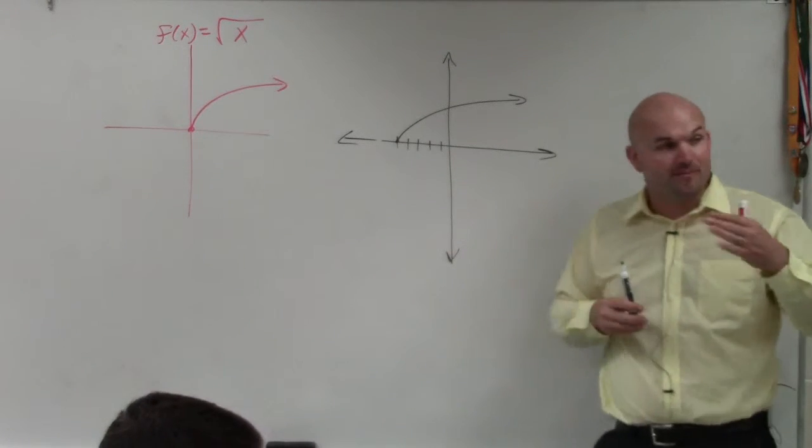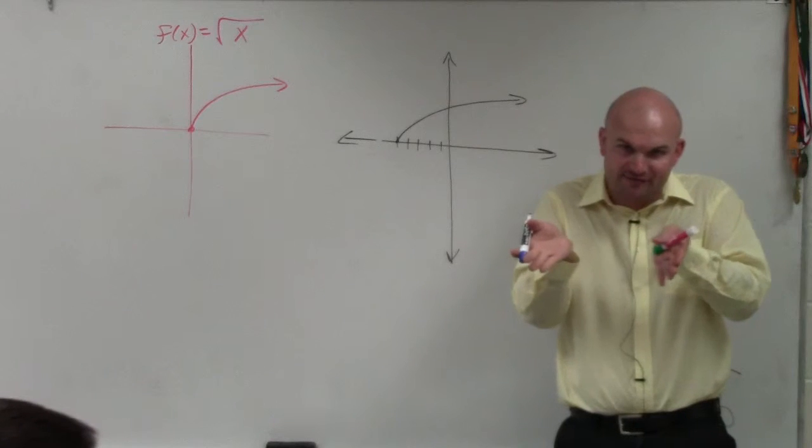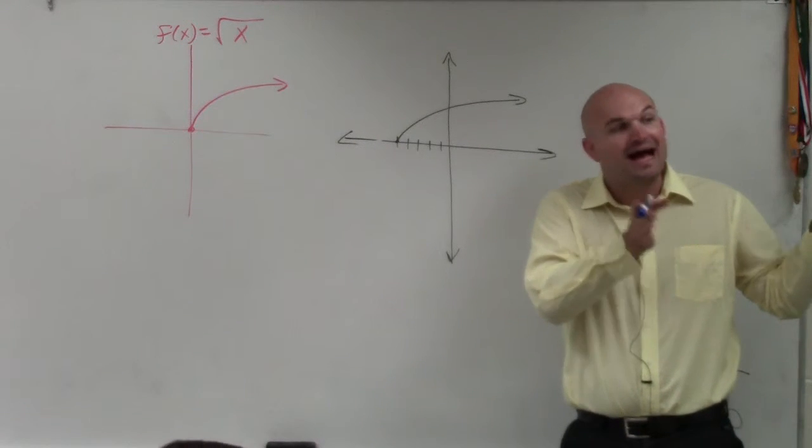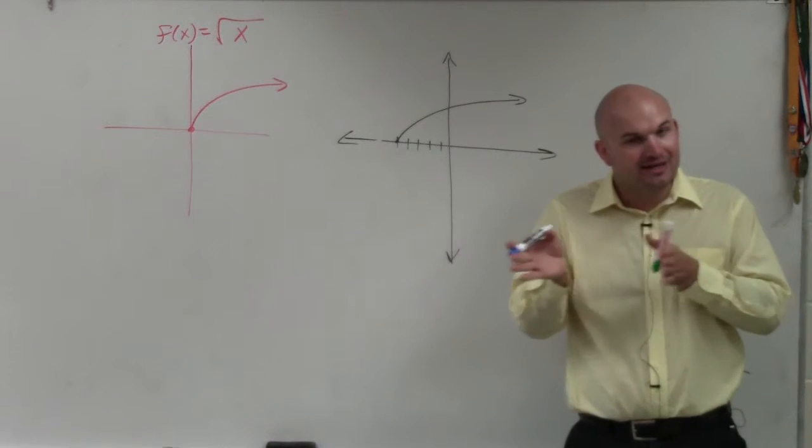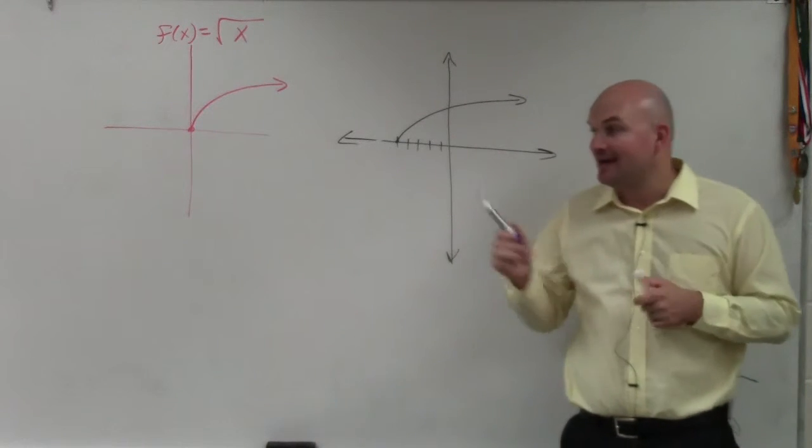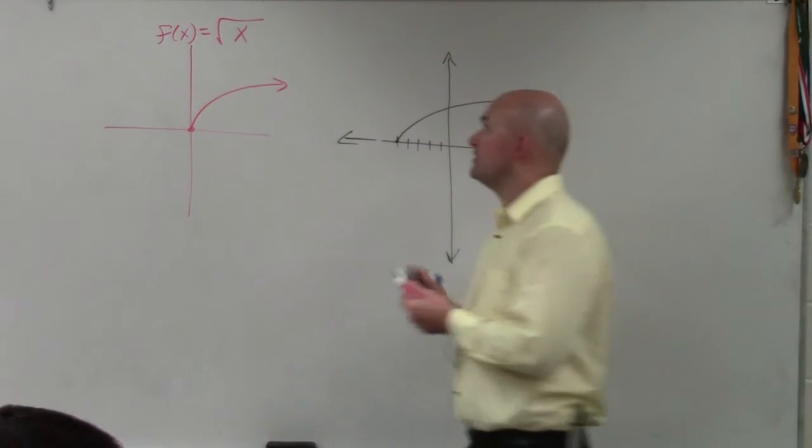So if you remember, which transformation moved the graph left or right? Was it transformations inside the function or outside the function? Outside the function, I'm sorry. Inside the function is your horizontal transformation. And if it was positive, that would move it to the left.